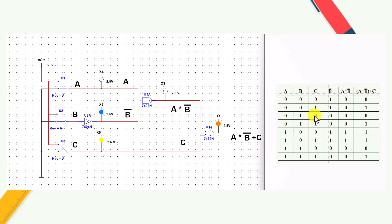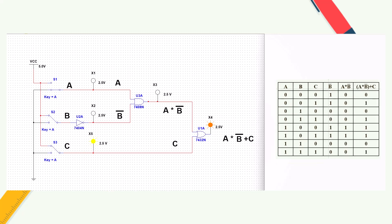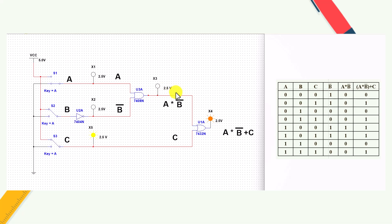Next condition: A=0, B=1, C=0. Switch S1 is open, S2 is closed, S3 is open. Output is 0 since A·B̄ = 0 and C = 0. Next: A=0, B=1, C=1. Switch A closed, Switch B open, Switch C open. This completes the verification of the combinational circuit using gates for the 3-variable arbitrary function.